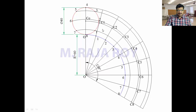The next step is: take C1 as centre, with radius of the rolling circle — that means radius 20 — draw an arc onto the locus of 1 only. I want to get P1, so draw this arc. This is nothing but locus of 1 here. This particular radius is 20, and this point is P1.